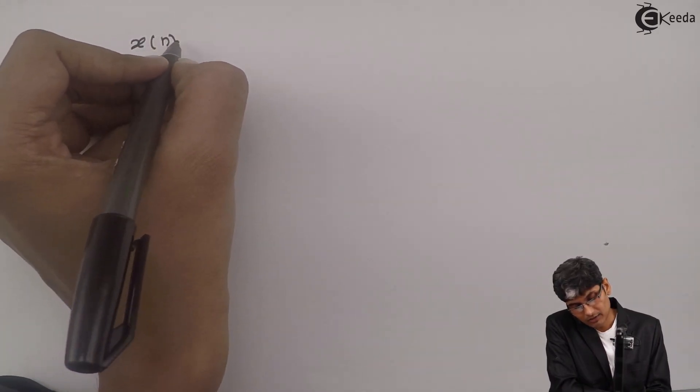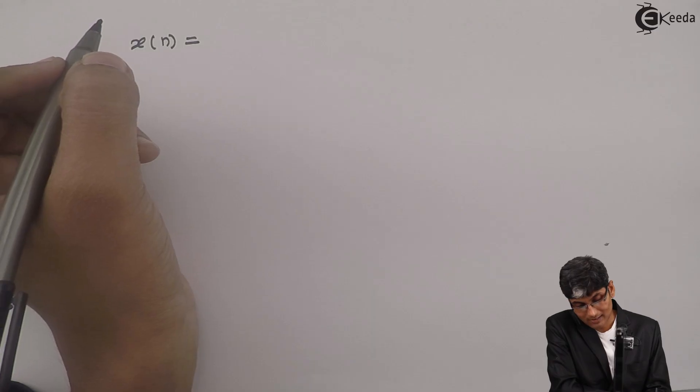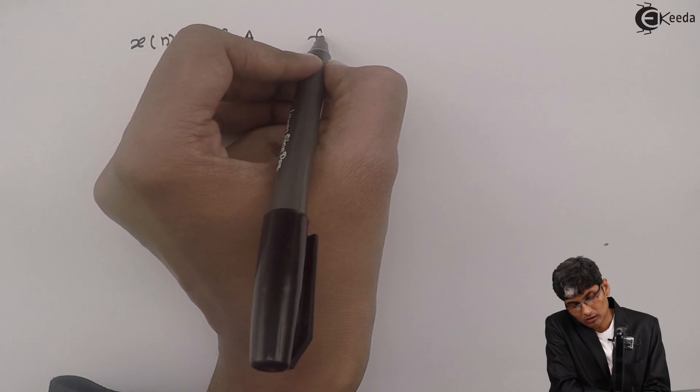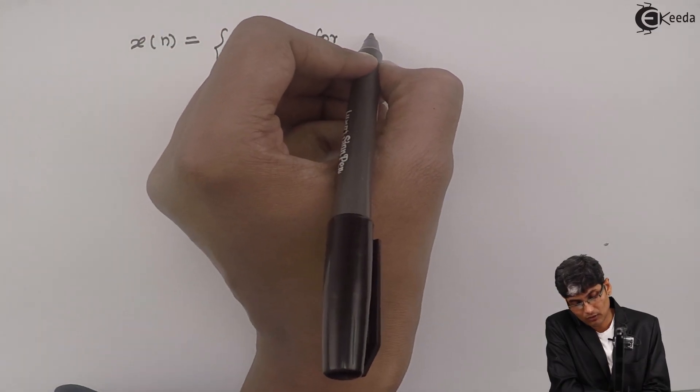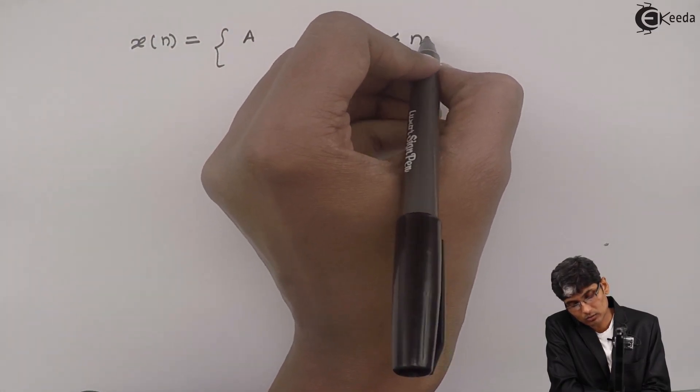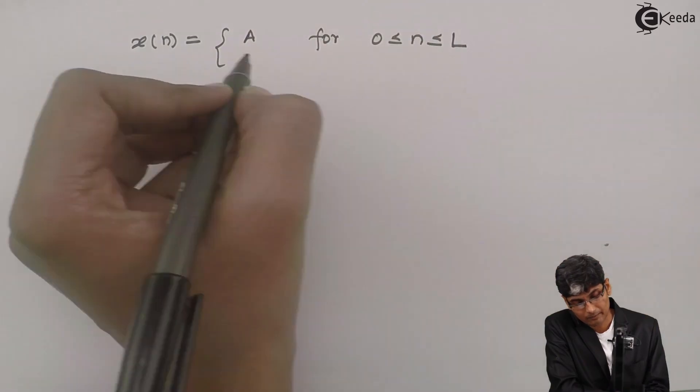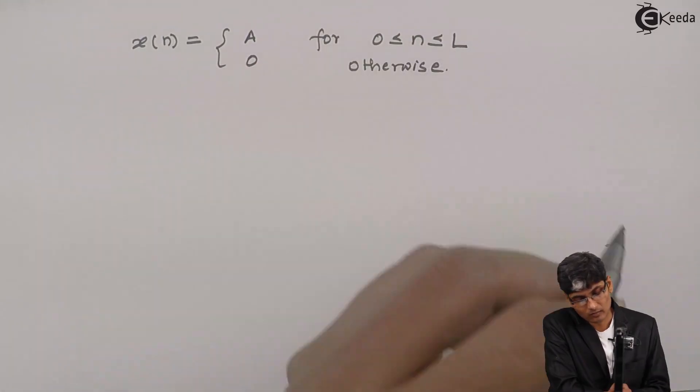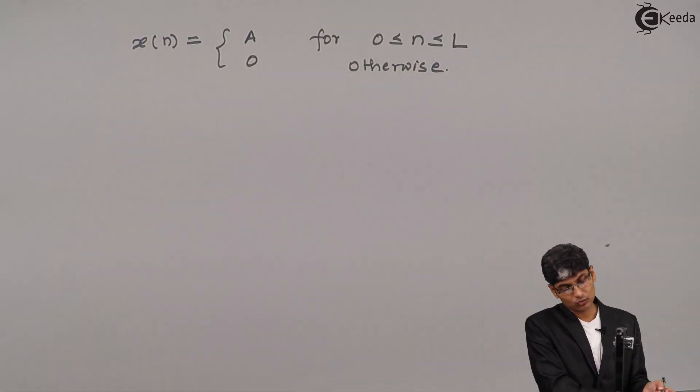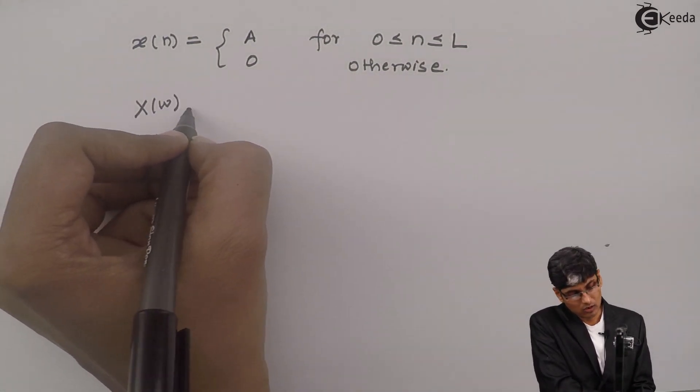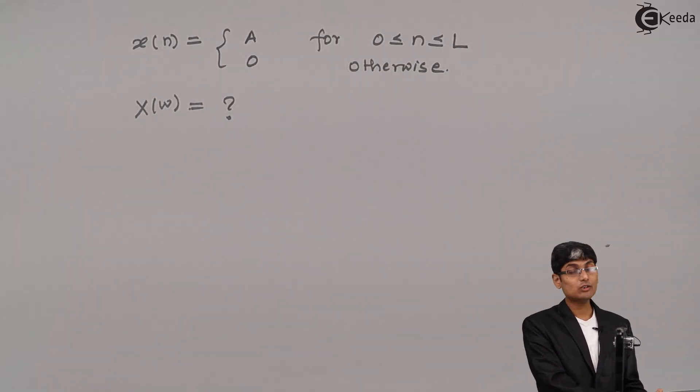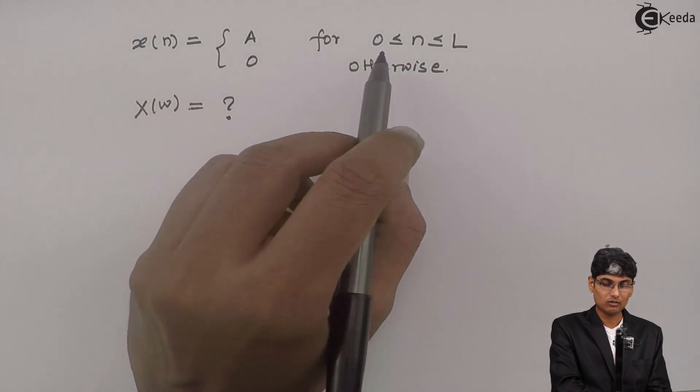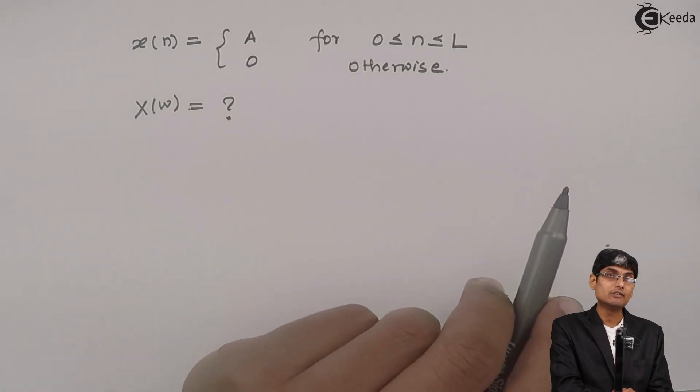A given sequence is x(n) = A for 0 ≤ n ≤ L, and 0 otherwise. They are asking us to find X(ω). We want to find X(ω) from this given sequence x(n) which is A for 0 to L and 0 otherwise.